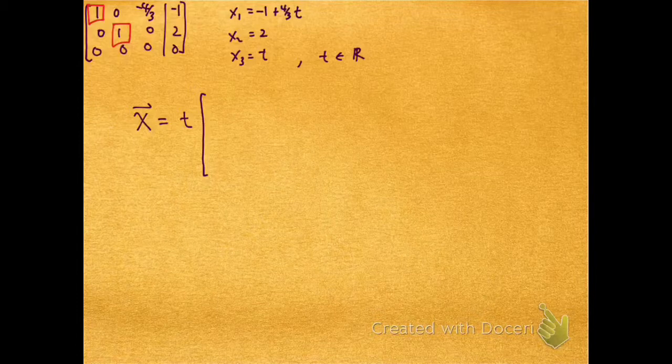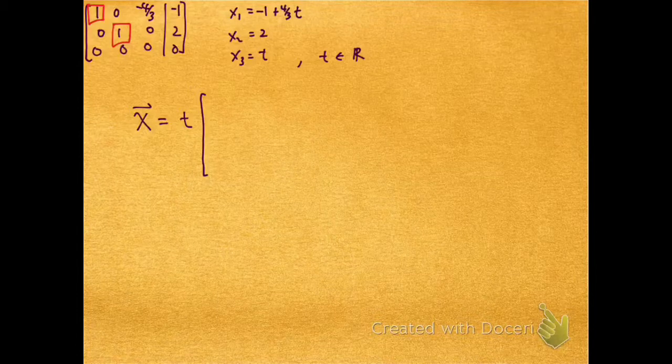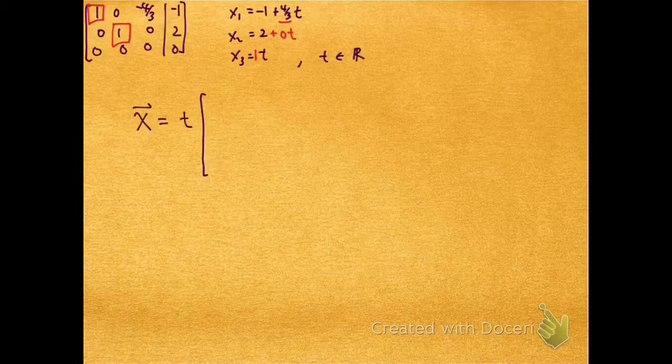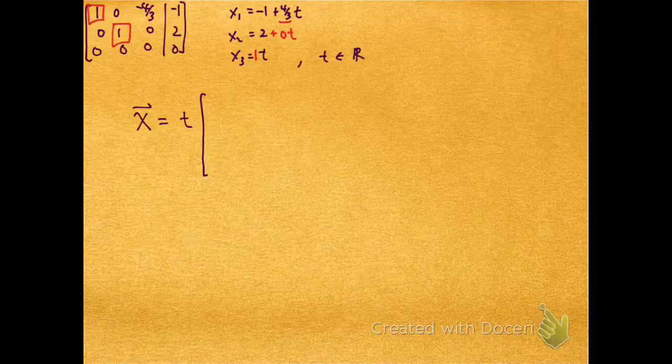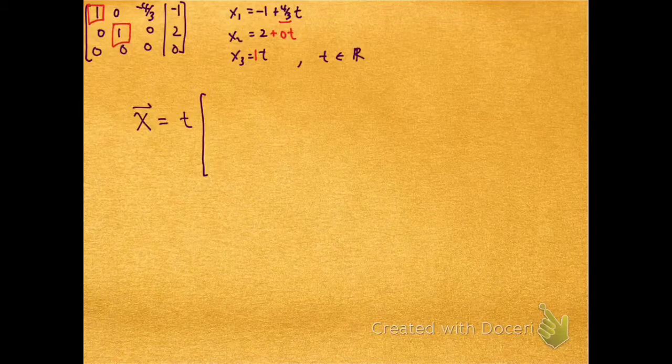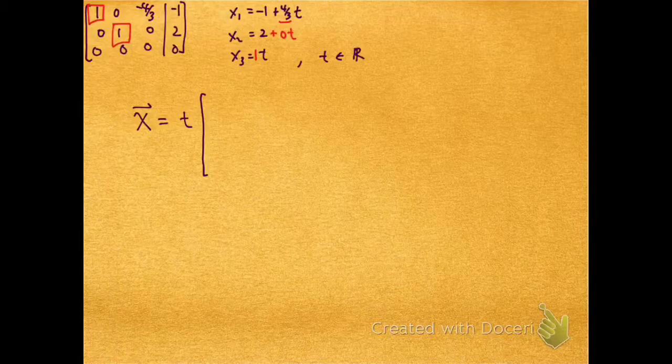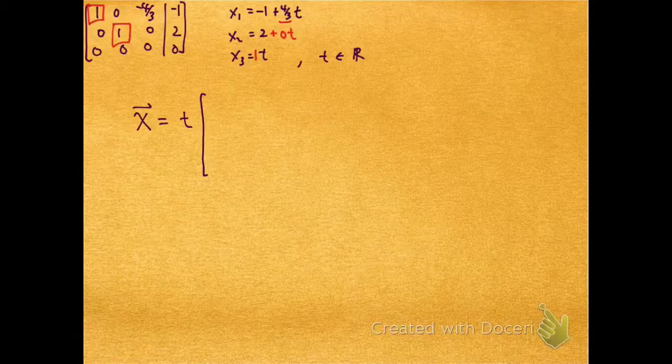If I want to write this in parametric vector form, I'm going to say x is equal to t times... Well, now I need to grab all the coefficients that have a t on them, and so this is the 4/3, an implicit 0t there for x2, and a 1 times t for x3.